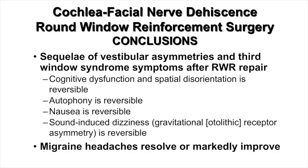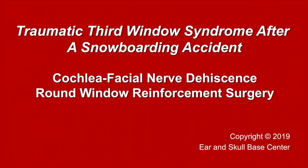In summary, after round window reinforcement surgery for cochleofacial nerve dehiscence and CT-negative third window syndrome, the cognitive dysfunction and spatial disorientation is reversible. Autophony is reversible, and so is the nausea. Sound-induced dizziness and gravitational/otolithic receptor dysfunction type of vertigo is also reversible. Finally, migraine headaches resolve or are markedly improved such that they can be managed medically. This case demonstrates a boy who suffered traumatic third window syndrome after a snowboarding accident — on the right due to cochleofacial nerve dehiscence and on the left due to CT-negative third window syndrome — both treated with round window reinforcement surgery.